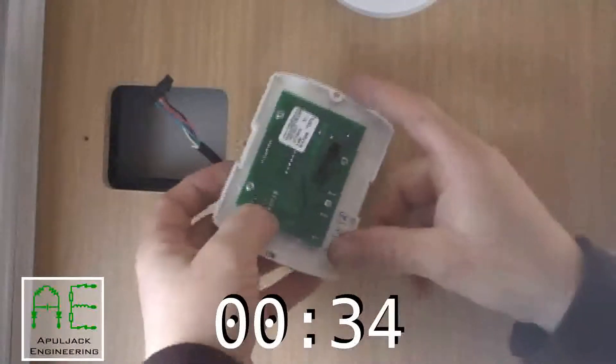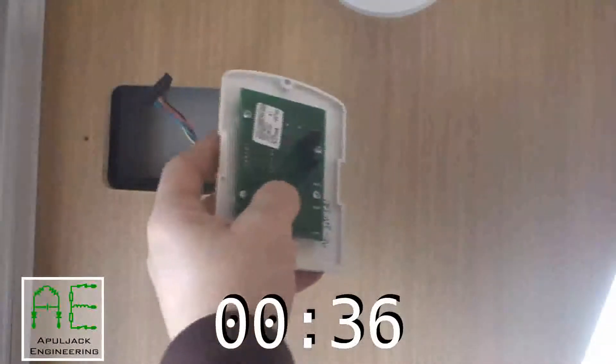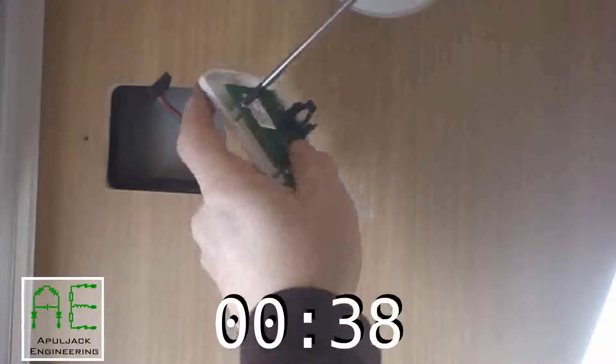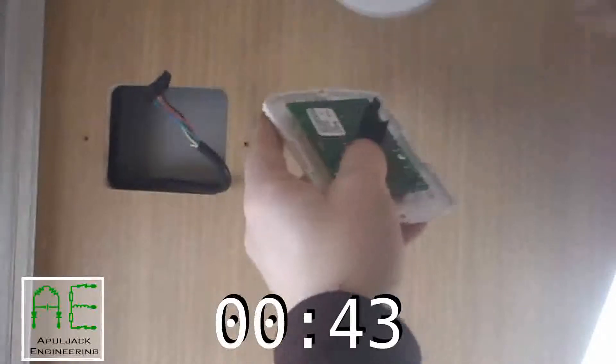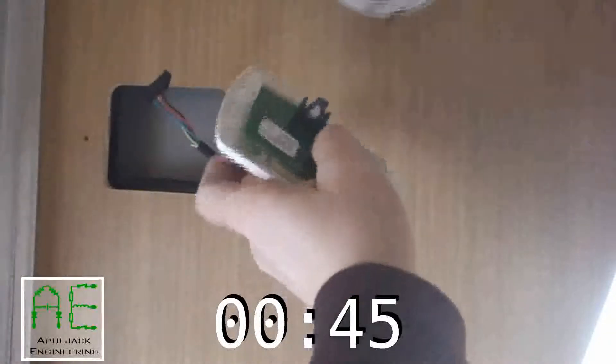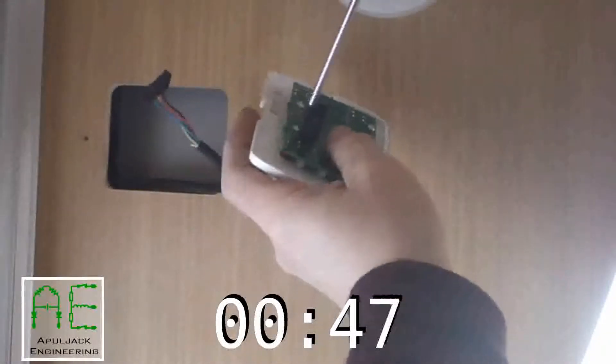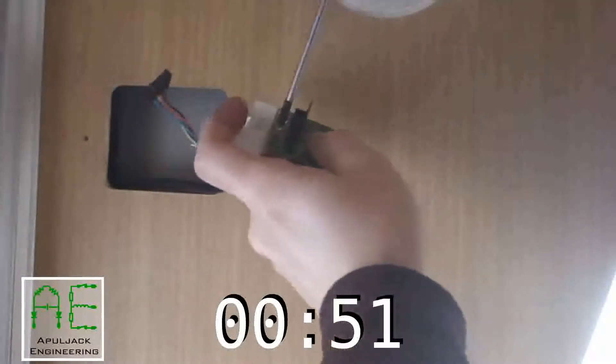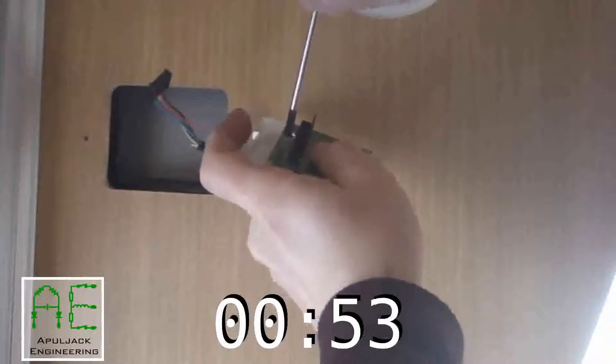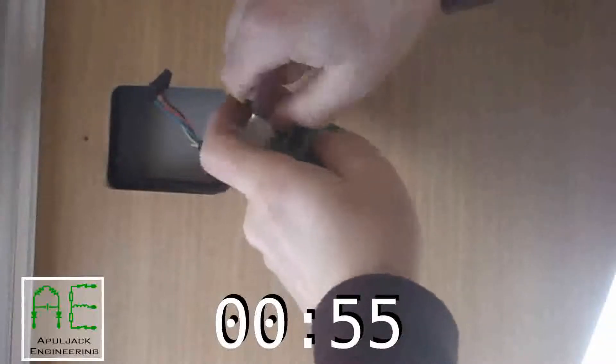Now you need to remove the circuit board off the back of the plastic housing and replace it with the Applejack Engineering board. Just four screws.